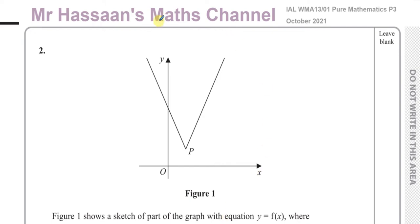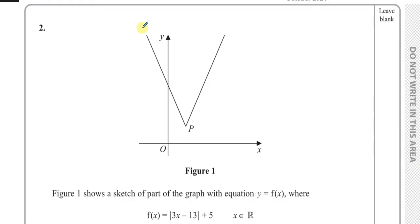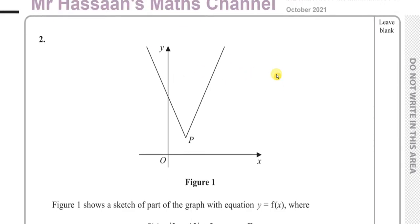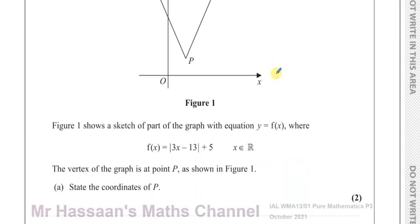Welcome back. This is Mr. Hassan's Maths Channel and I'm now answering question number two from the Pure Mathematics P3 International A-Level Edexcel October 2021 session. This question is about the modulus function. It tells us that in figure one we see a sketch of part of the graph with equation y equals f of x, where f of x equals the modulus of 3x minus 13, plus 5, where x is an element of the real numbers. The vertex of the graph is shown at point P and we've got to state the coordinates of point P.